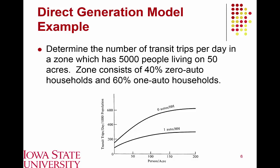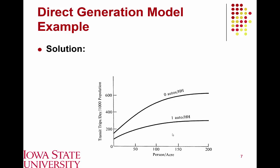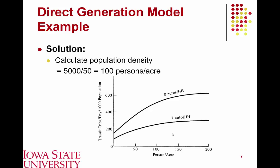Looking at population density on the x-axis in persons per acre, we see different transit utilization rates for households with no automobiles versus one automobile. As you would expect, a household without any automobiles is going to make a larger number of transit trips than a one-auto household. Utilizing this graphic, we calculate the population density: 5,000 people over 50 acres equals 100 persons per acre. From this, we can directly determine that we would expect 510 transit trips per day among zero-automobile households and 250 trips per day from one-automobile households.